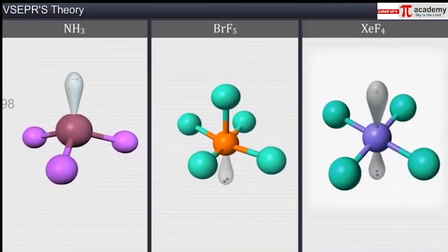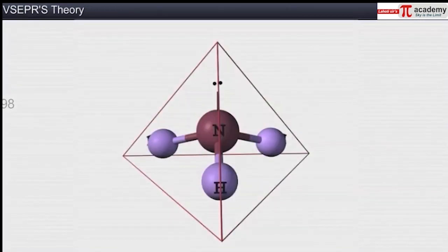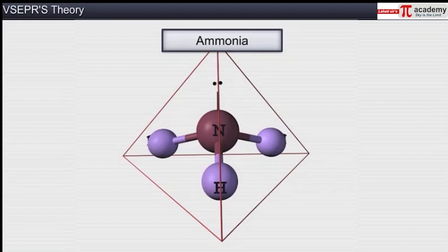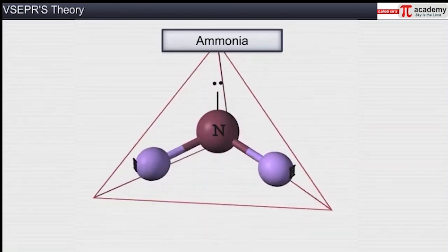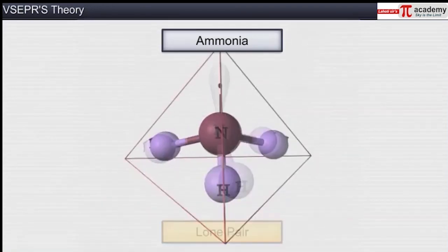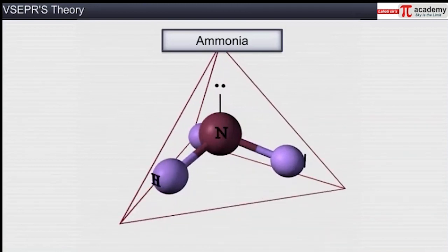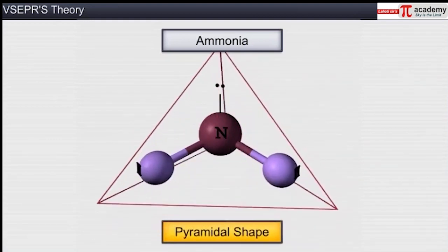Now let's analyze the shapes of some molecules with reference to their valence electron pairs. In ammonia, the central nitrogen atom has three bond pairs of electrons and one lone pair of electrons. The ideal geometry of a molecule with four pairs of electrons would be tetrahedral. However, the lone pair of electrons repels the N-H bonded electron pairs, thus reducing the bond angle to 107 degrees and giving the molecule a pyramidal shape.